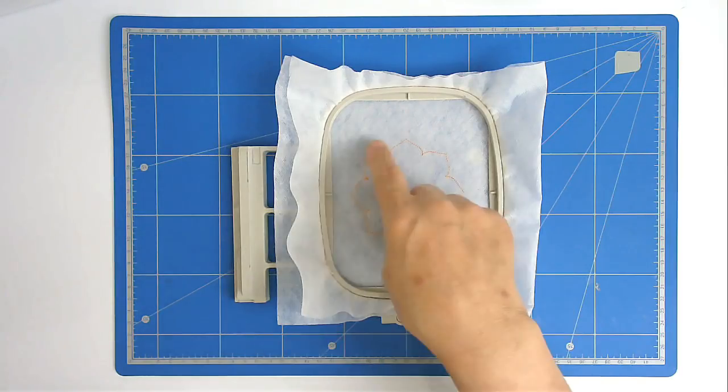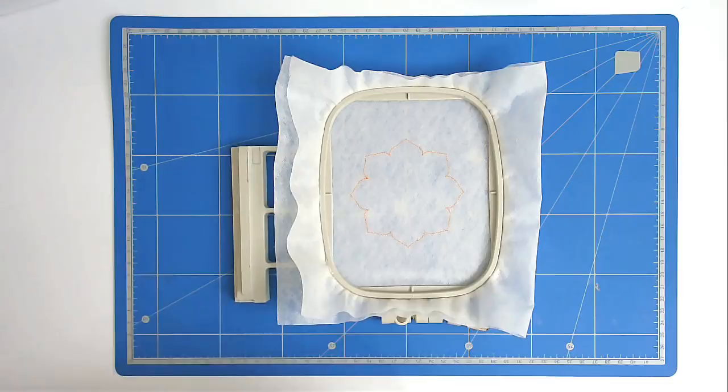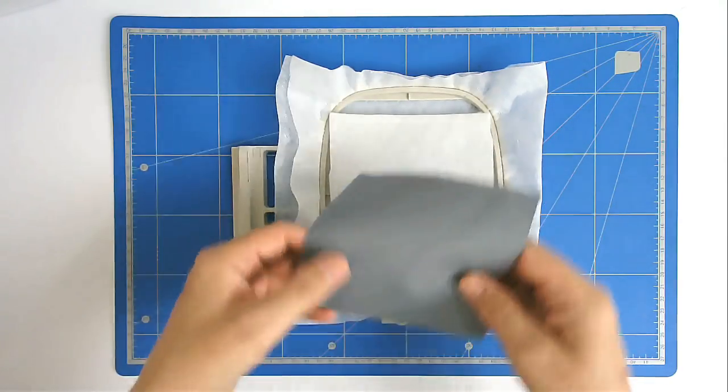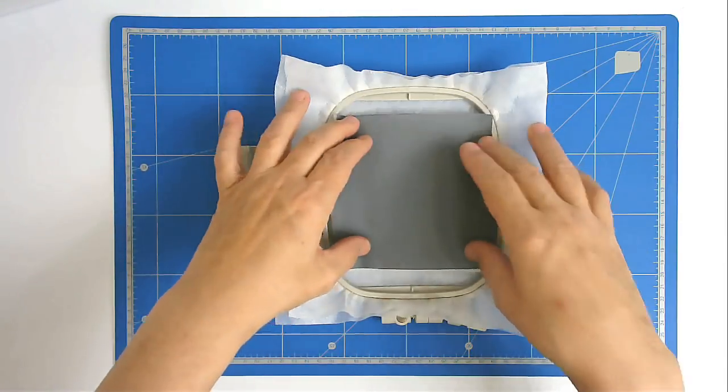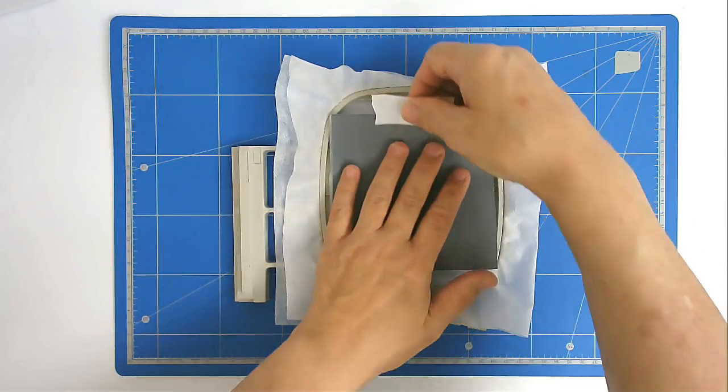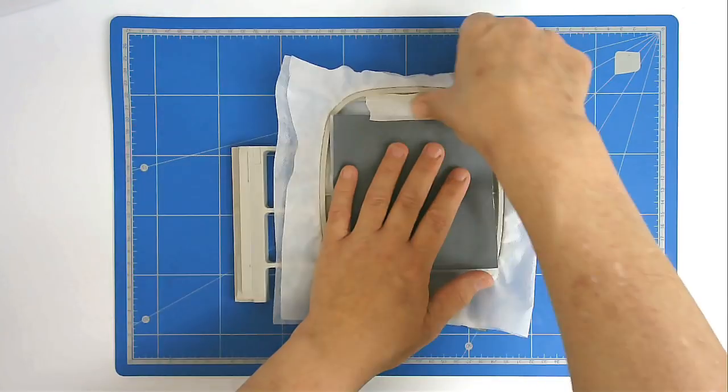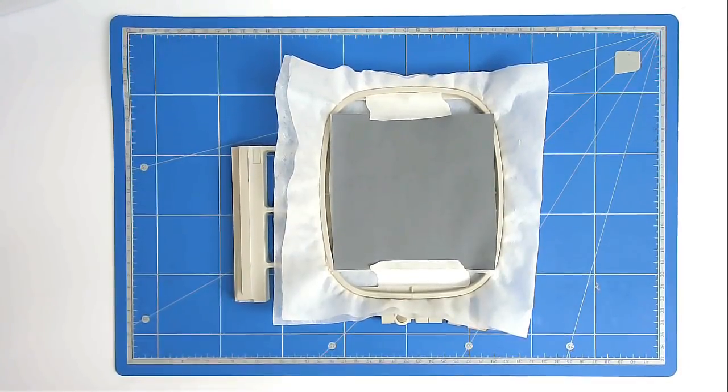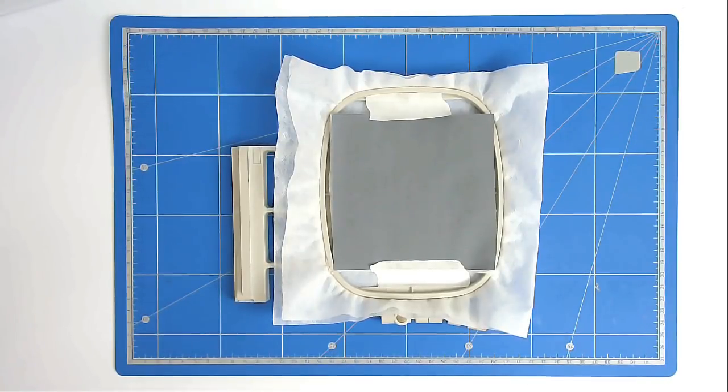You're now going to place your batting and your front fabric over the outline. I like to hold mine in place with a little bit of tape. I'm now going to pop that into my machine, and we're going to stitch around number two to secure the fabric and batting, and it will also give us our placement line for the center.